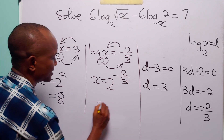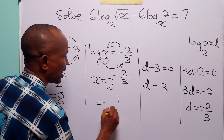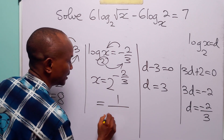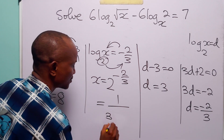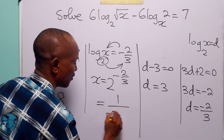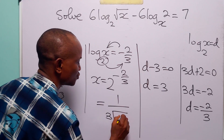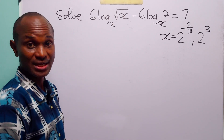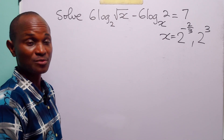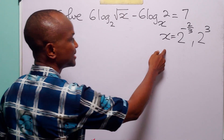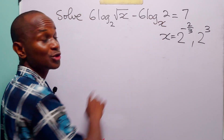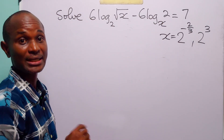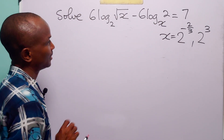You can rewrite x equals 2 to the power minus 2 over 3 as 1 over the cube root of 2 squared. Now to check our answers, let us substitute these two values of x into the original equation to make sure the equation is satisfied.